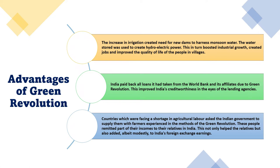Countries facing a shortage of agricultural labor asked the Indian government to supply them with farmers experienced in the methods of the green revolution. These farmers remitted part of their incomes to relatives in India, which not only helped those relatives but also added modestly to India's foreign exchange earnings. These were some national developments and growth that occurred because of the green revolution.